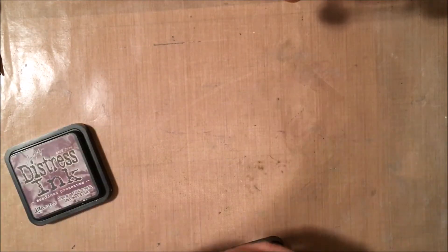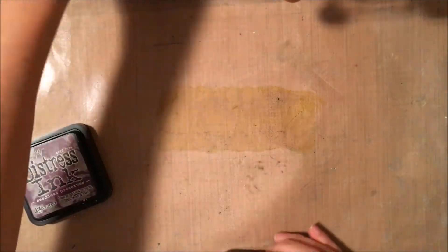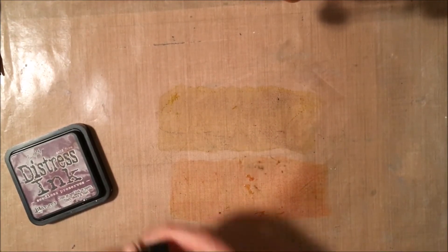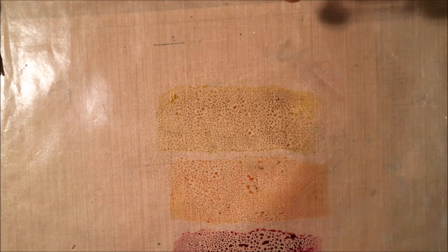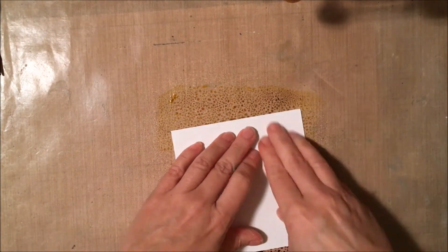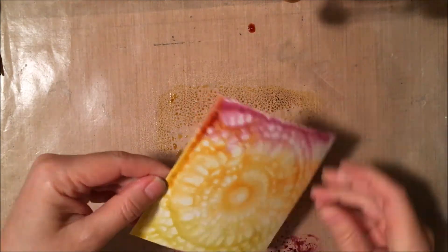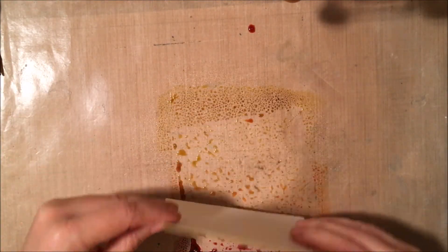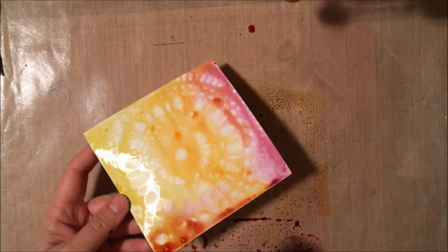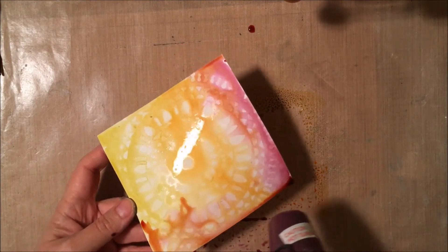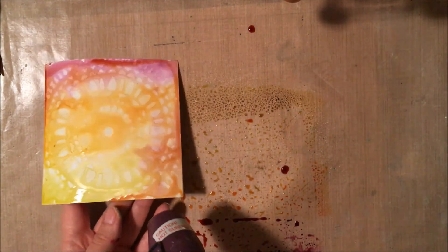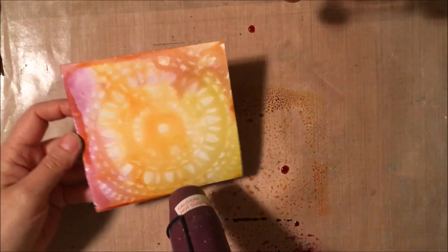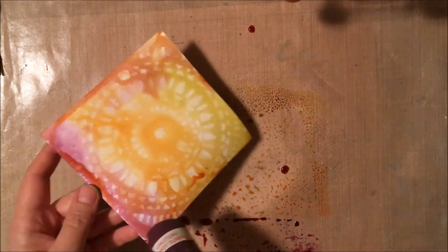So I have a couple of distress ink pads. I'm going to smoosh some color down on my nonstick craft sheet. You can also do this technique with distress stains. That will also work. So I have some colors there. And then I'm going to add some water. So this gets nice and watery. Then I'm going to go ahead and place my piece, this is my piece that's covered with the gesso, right down in that wet ink. You can already start to see that design pop out. Darker colors will sometimes make that gesso stand out a little bit more than the lighter colors will.